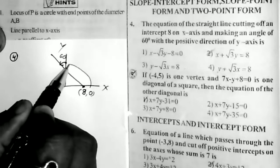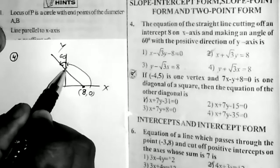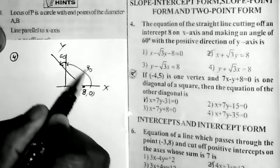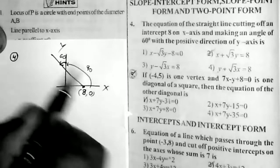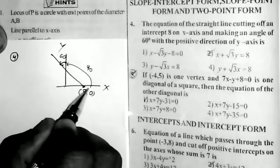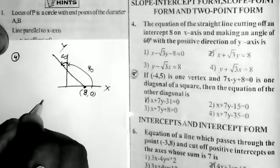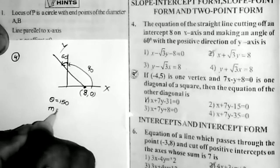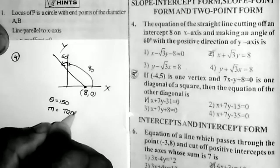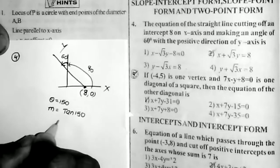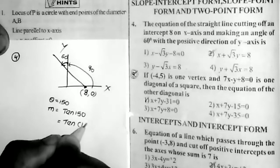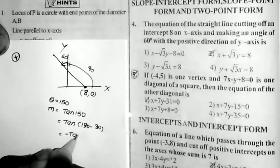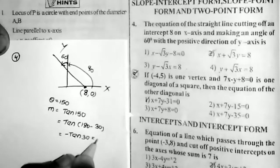The angle made by the line with the x-axis is θ = 150°. So the slope M = tan 150° = tan(180° − 30°) = −tan 30° = −1/√3.